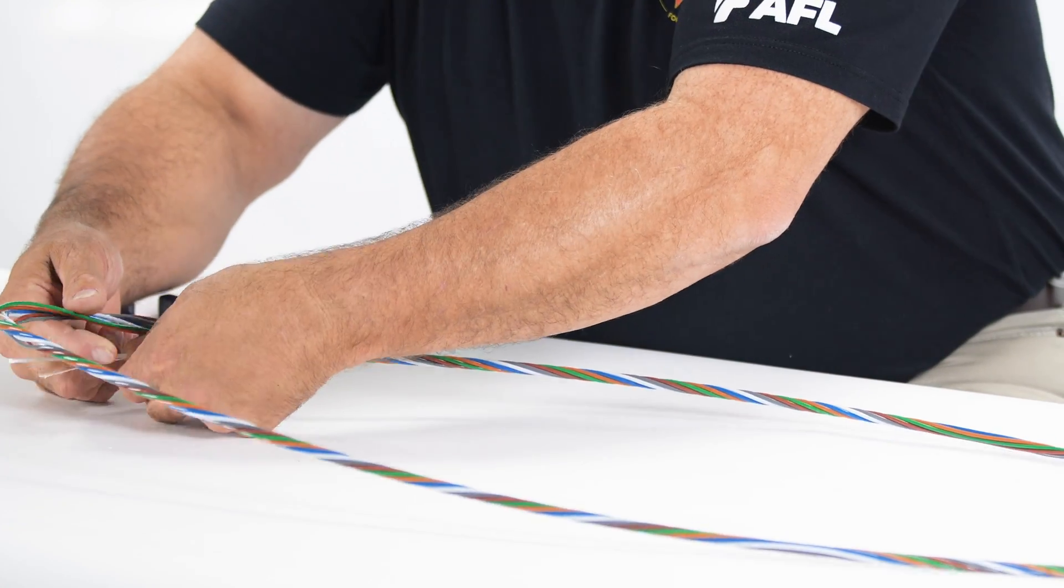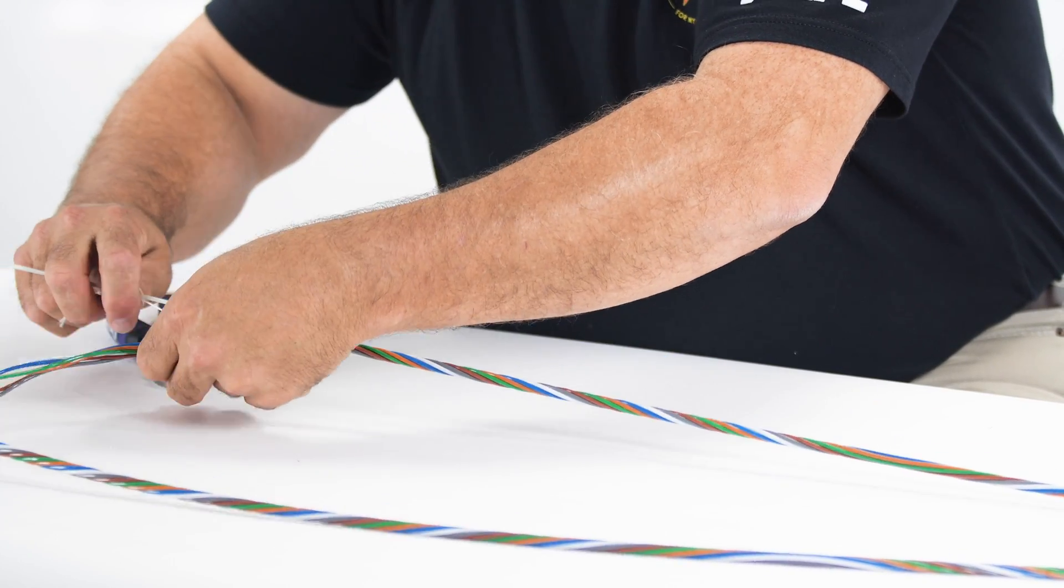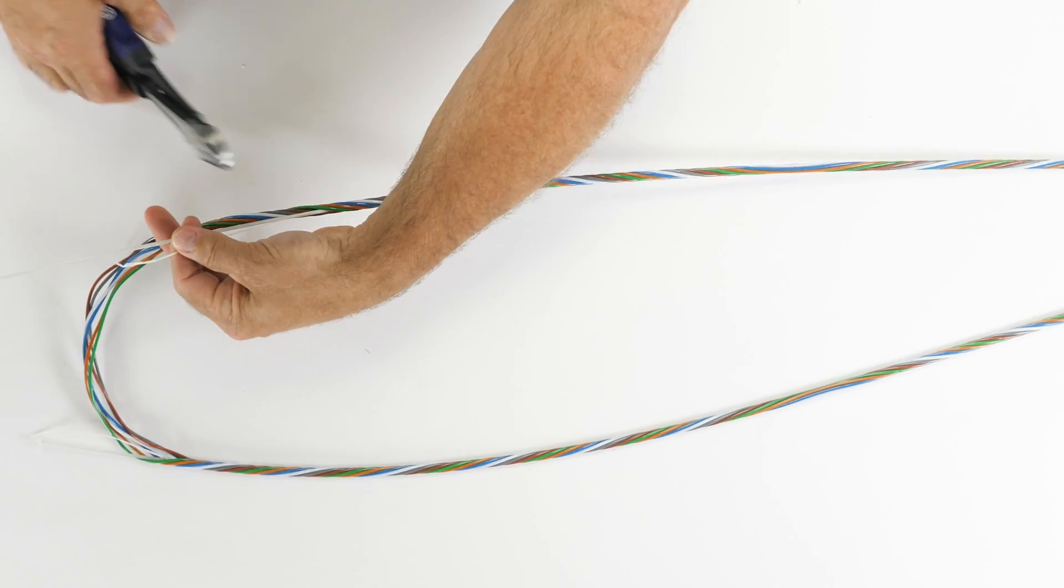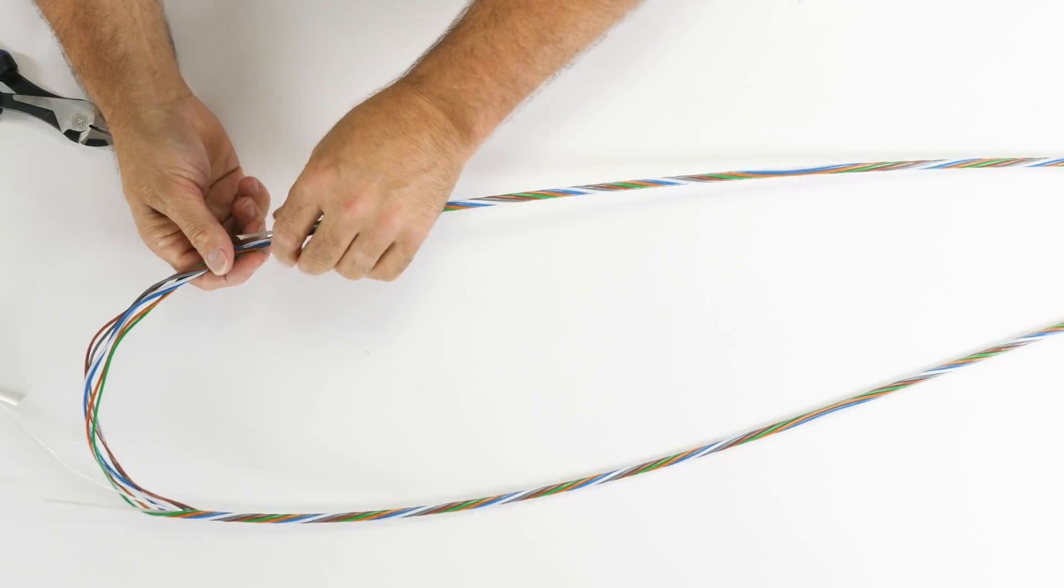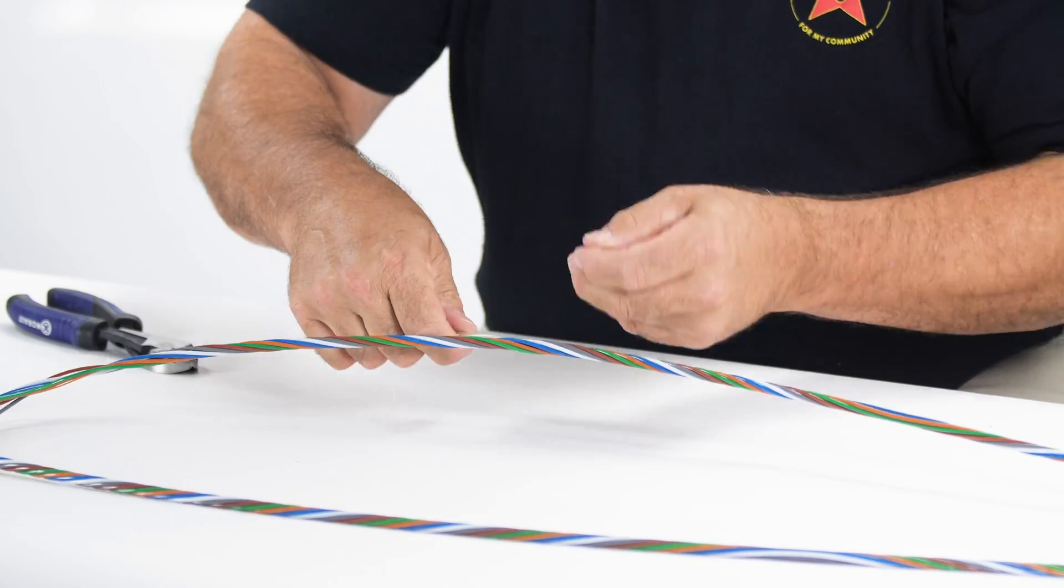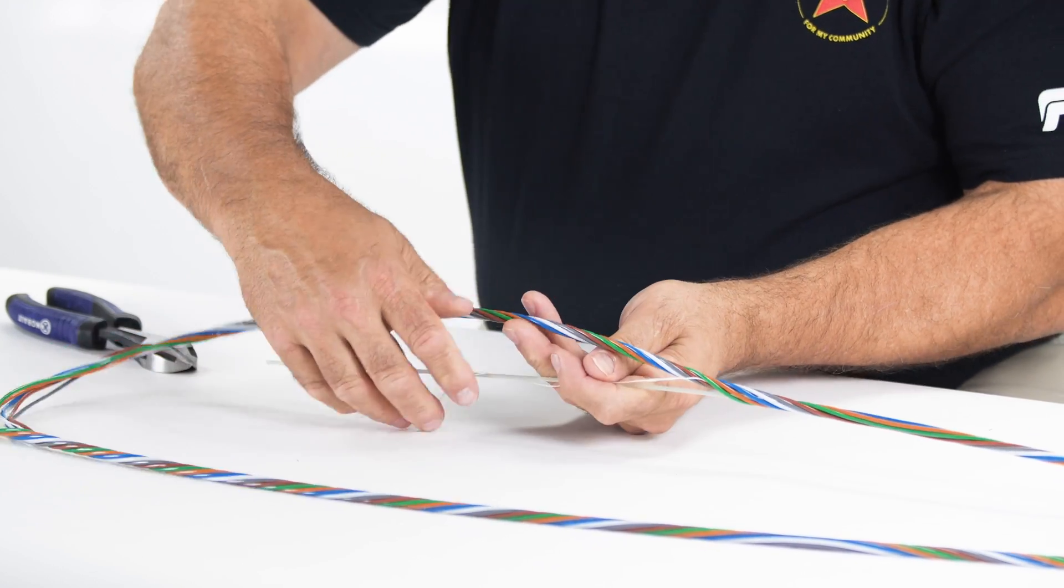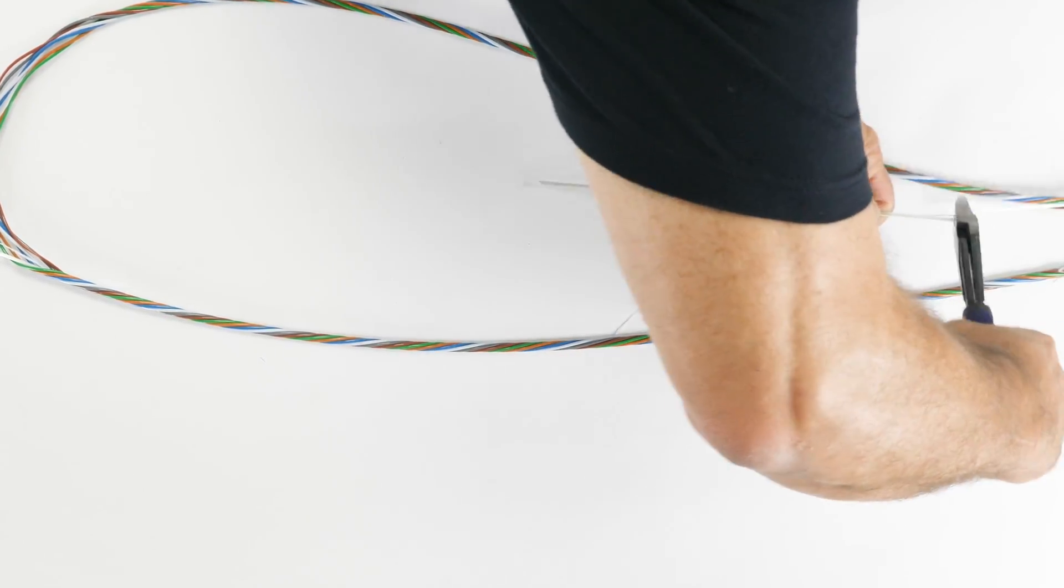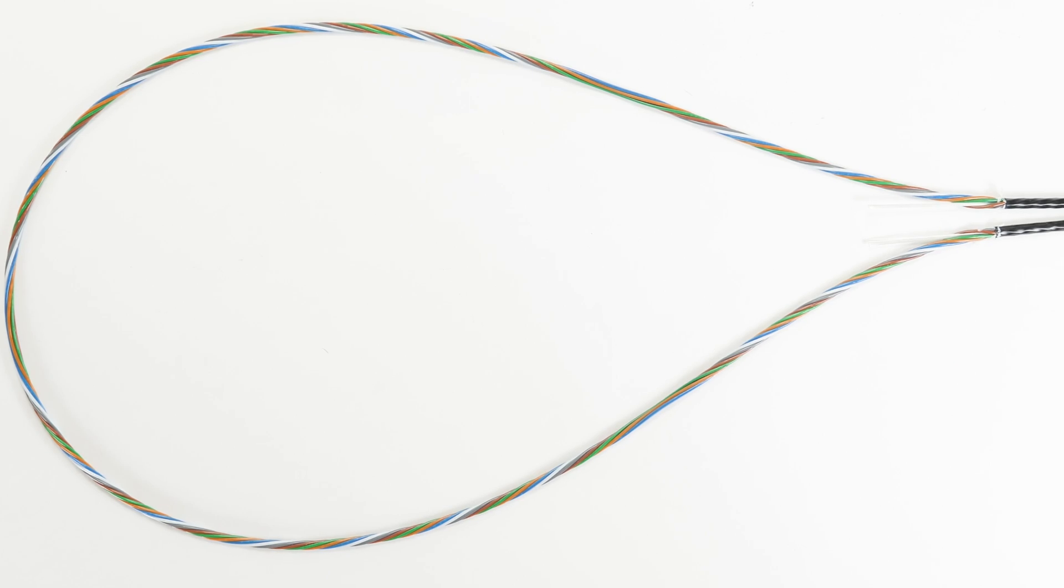From this point, walk out the FRP rod from within the buffer tubes. Cut the FRP rod throughout this process as needed. Be sure to place the buffer tubes back into their original orientation throughout the removal process. Cut and remove the entire FRP rod except for approximately 4 inches on each side to secure the cable within the closure.